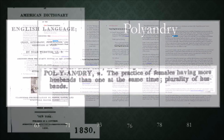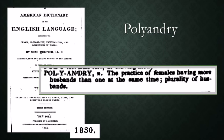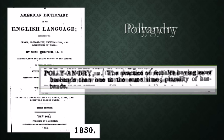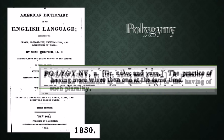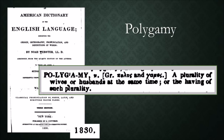Webster's 1830 Dictionary defines polyandry as the practice of females having more husbands than one at the same time — plurality of husbands. In contrast, it defines polygyny as the practice of having more wives than one at the same time. Traditional polygamy, or a plurality of wives, is really polygyny. The word polygamy actually means a plurality of wives or husbands at the same time. We will use the literal terms of polyandry and polygyny in this video.